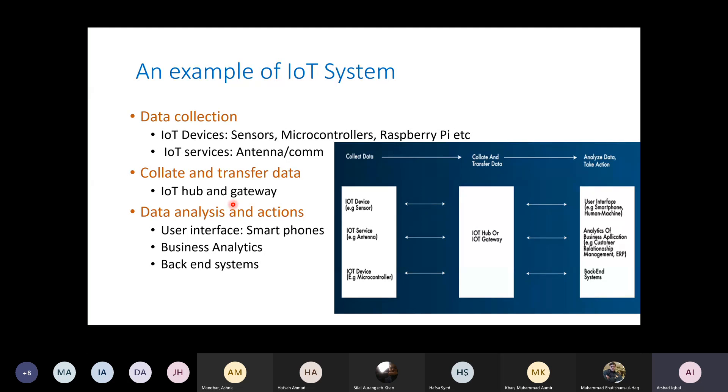Here is an example of an IoT system. It basically consists of three sections: one is data collection, another is collate and transfer data, and the other one is data analysis and actions.